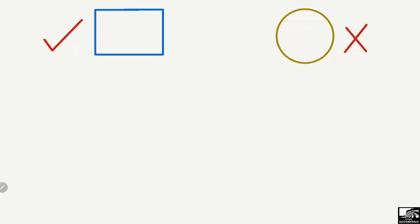Here we see a rectangular cross-section of the beam — or square — and here we see the circular cross-section of the beam. So why do we prefer mostly the rectangular section of the beam rather than the circular cross-section of the beam? Let me explain with a simple example.